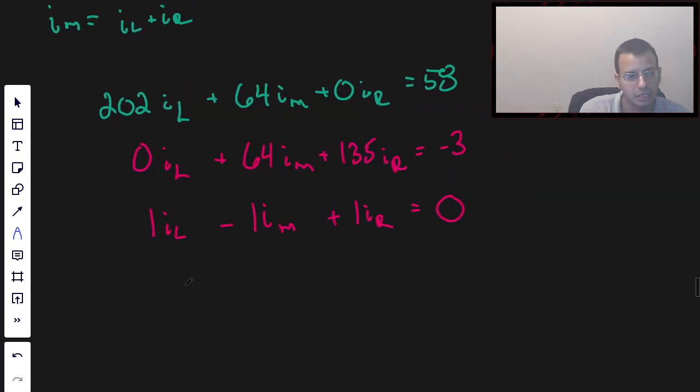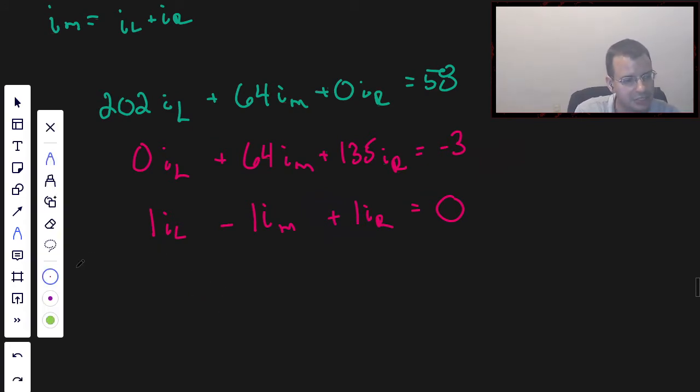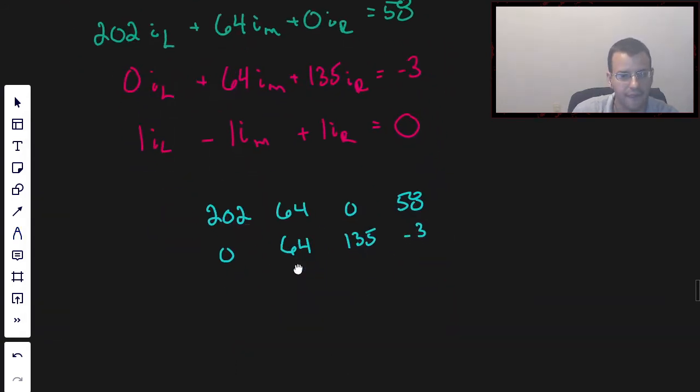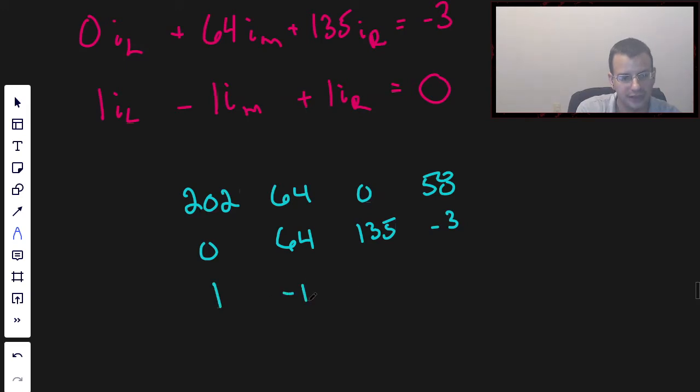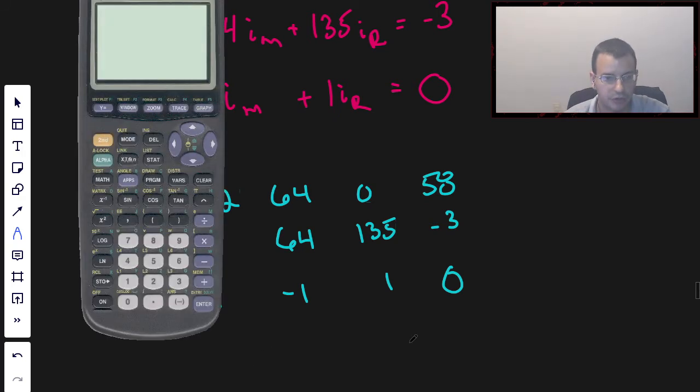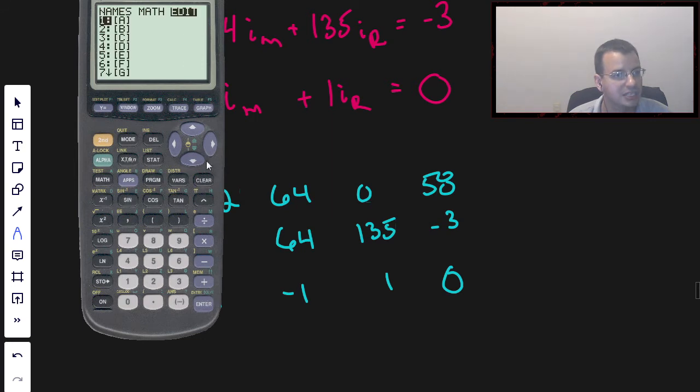So now I'm going to put this into a matrix. 202, 64, 0, 58, 0, 64, 135, negative 3, and then 1, negative 1, 1, 0. We're going to reduce this to row reduced echelon form. Second matrix, we're going to edit matrix A.